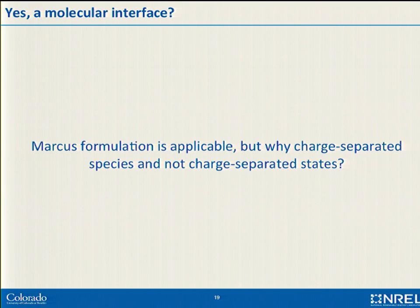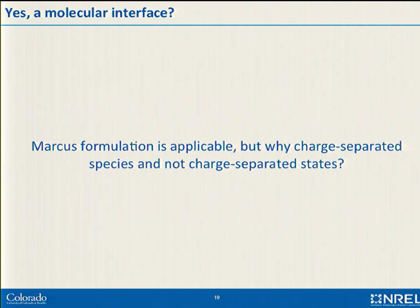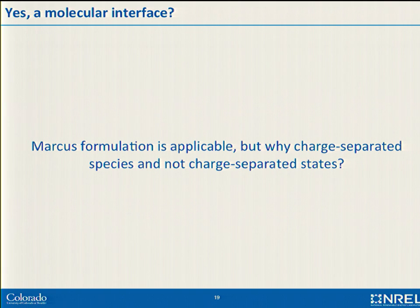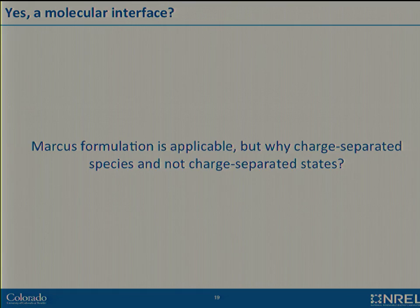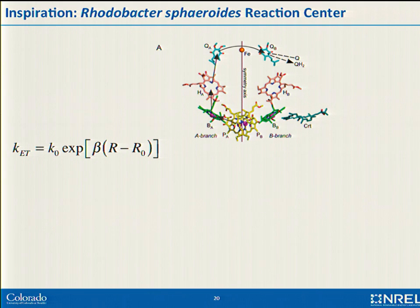Why do we get separated charges and not bound states? Because devices work. This is pure conjecture, but I'm hoping to convince you it has merit. It's inspired by the photosynthetic reaction center, where nature has learned how to do this charge separation very well. Here we have the special pair in the reaction center — this is where the light harvesting antenna puts the excitation. Electron transfer goes very quickly from donor to acceptor. In the middle is an intervening molecule: we have a donor, a bridge, and an acceptor.